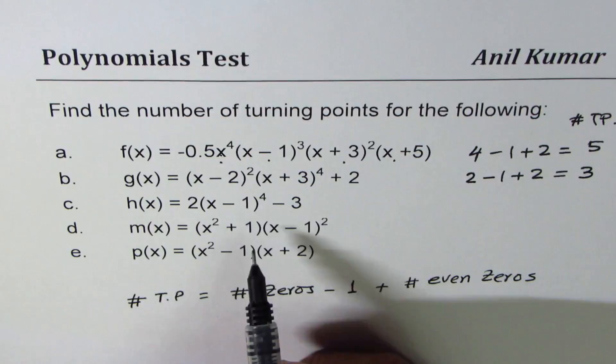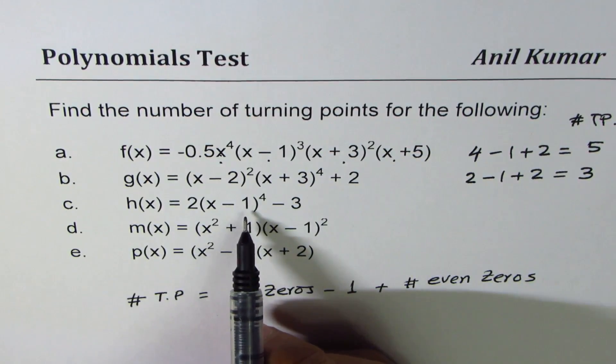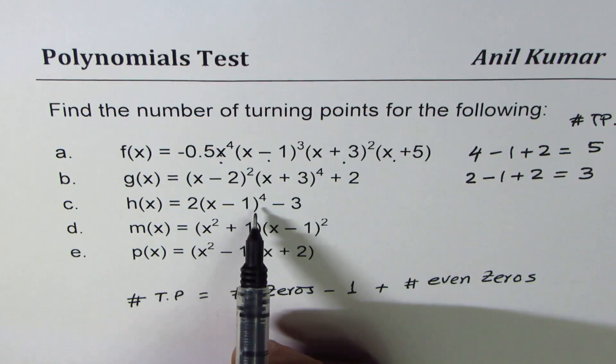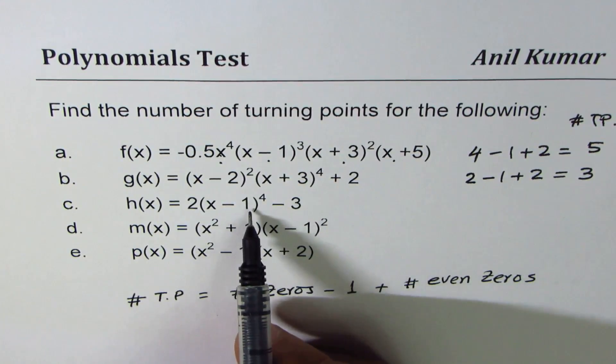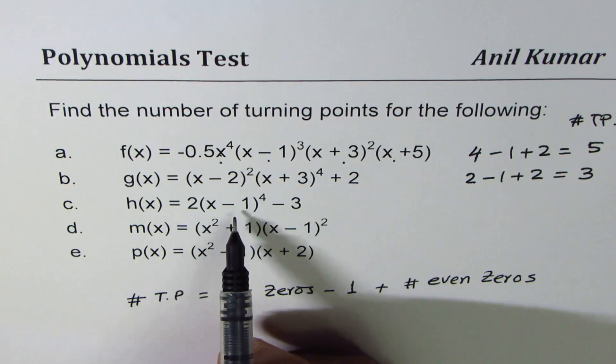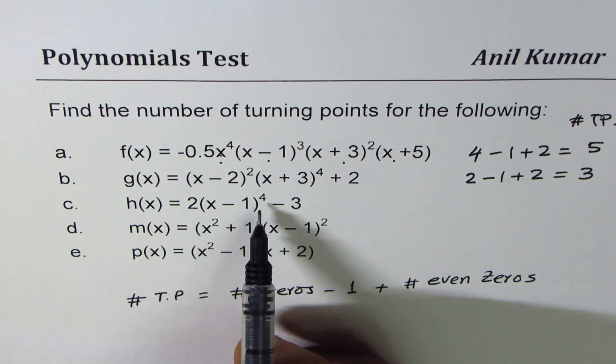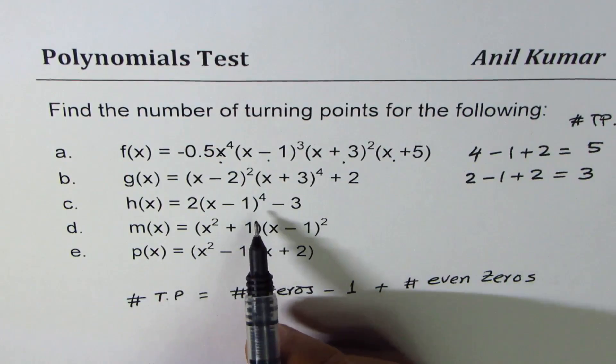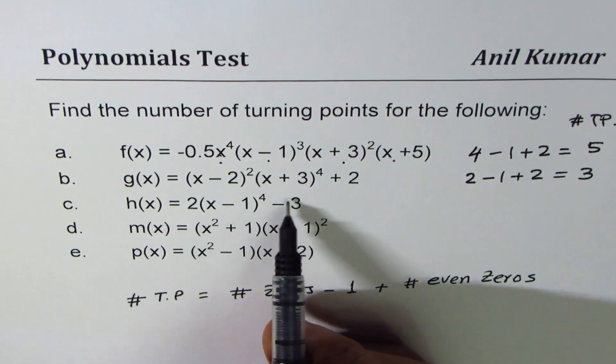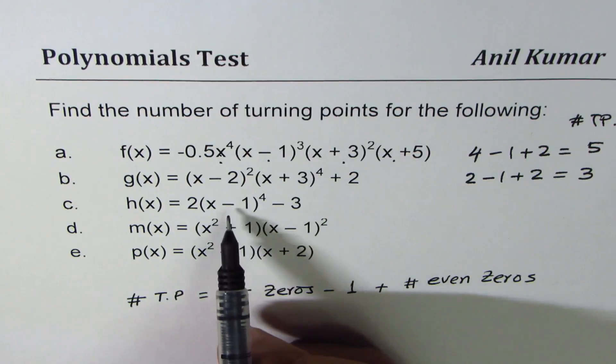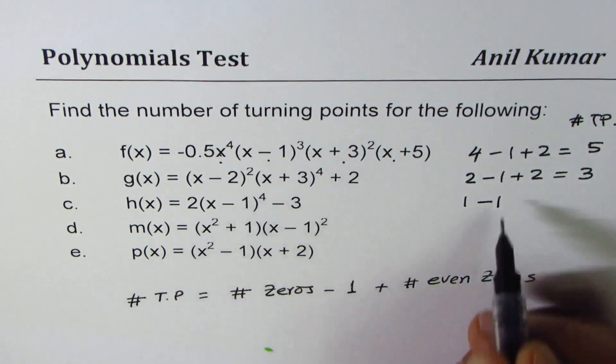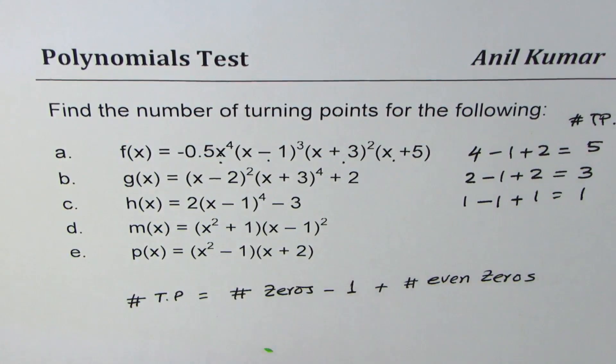Now in this case, we have (x - 1) to the power of 4. The function is like a parabola which opens upwards with the form of a vertex form, so that gives you only one turning point. This one is just one turning point. You could use a formula like this: ignoring the term -3, we have 1 zero minus 1 plus number of even zeros is 1, so that gives us 1 turning point.